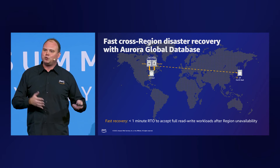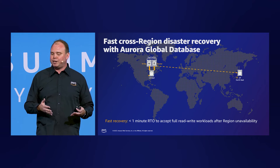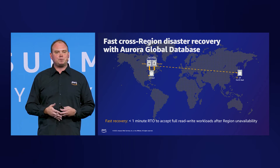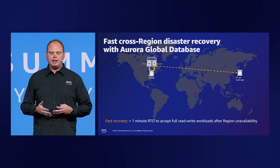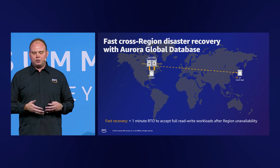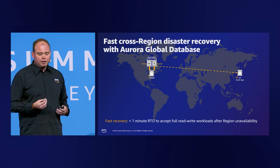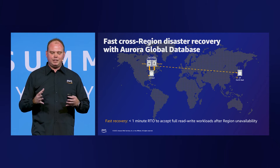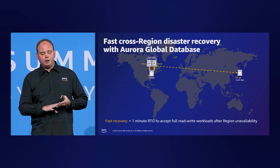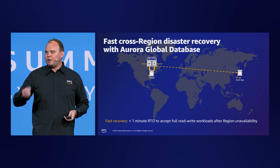Let's move into global databases with Aurora. Aurora is designed for globally distributed applications, allowing a single Aurora database to span multiple AWS regions. It replicates your data with no impact on database performance, enables fast local reads with low latency in each region, and provides disaster recovery for region-wide outages. If your primary region suffers a performance degradation or outage, you can promote a secondary region to take read-write responsibilities. An Aurora cluster can recover in less than one minute, even in the event of a complete regional outage, providing an effective RPO of one second and an RTO of less than one minute.